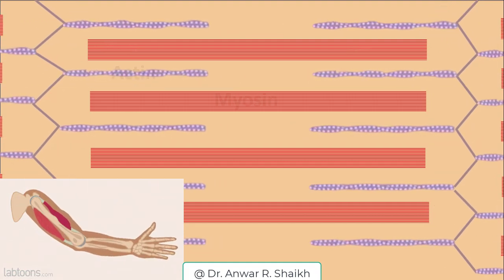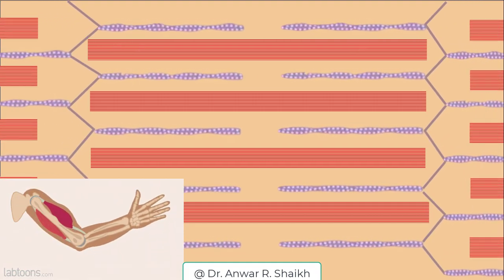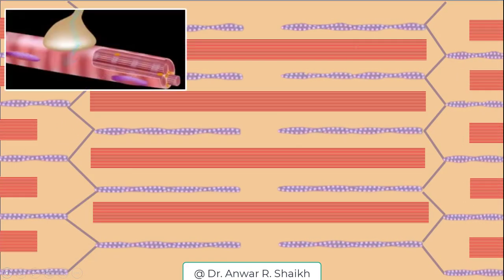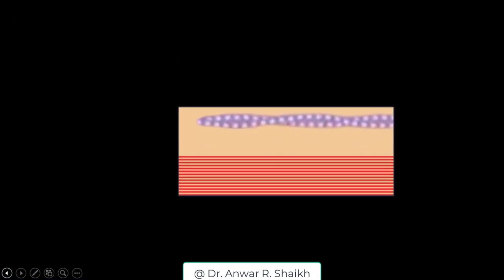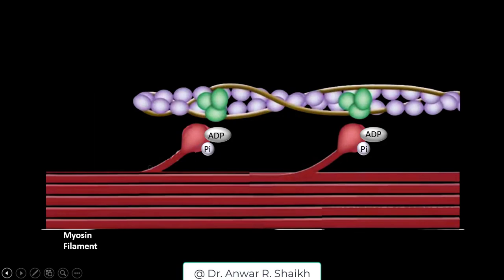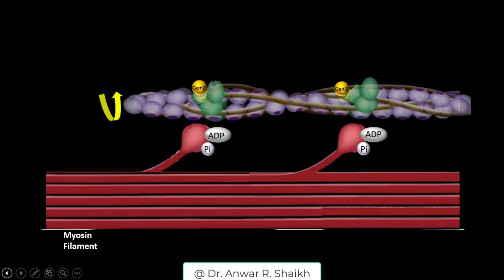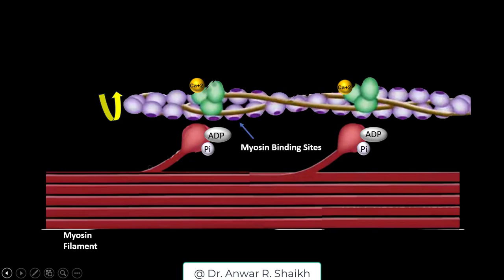Cross-bridge cycling forms the molecular basis for this sliding movement. Muscle contraction is initiated when muscle fibers are stimulated by a nerve impulse and calcium ions are released. The troponin units on the actin myofilaments are bound by calcium ions. The binding displaces tropomyosin along the myofilaments, which in turn exposes the myosin binding sites.